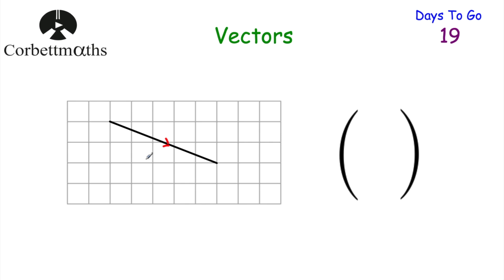If we wanted to represent this vector as a column vector, it would be 5 on top because it's 5 to the right, and then negative 2 beneath because it goes 2 down. The number on top represents how many squares left or right — positive means right, negative means left. The value beneath represents up or down — positive is up, negative is down. Think back to your translation vectors.